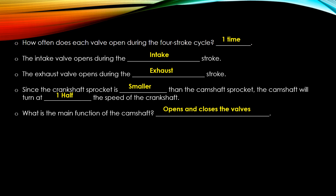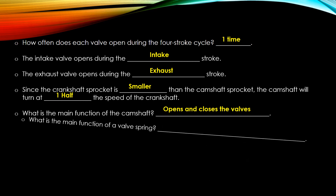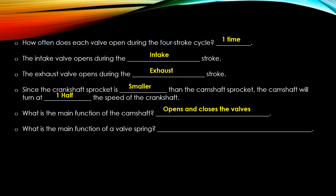The main function of the camshaft is to open and close the valves. The camshaft has egg-shaped lobes; when they rotate around they push the valve assembly open. Then, in conjunction with the valve springs, when that lobe passes off, the spring closes the valve. So the camshaft opens the valves and the valve spring closes them after they've been opened.